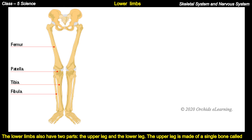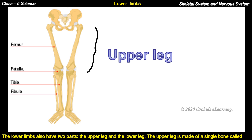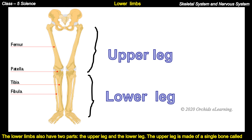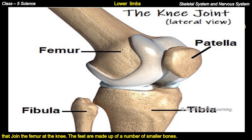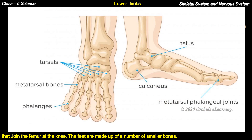The lower limbs also have two parts: the upper leg and the lower leg. The upper leg is made of a single bone called the femur or the thigh bone, which is the longest bone in the human body. The lower leg is made up of two bones that join the femur at the knee. The feet are made up of a number of smaller bones.